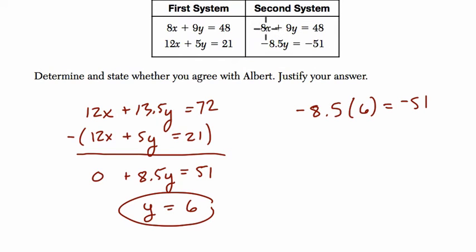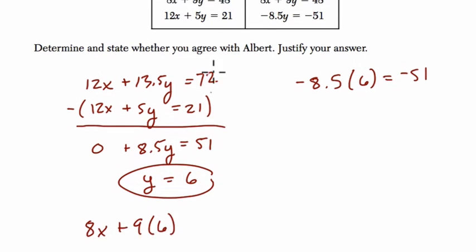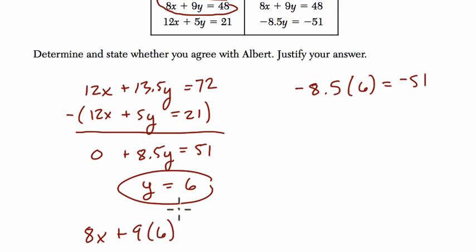If we plug it into the second one, we also need x first. Let's find x. So if we go back, we know y is 6, right? So 8x plus 9 times 6, I'm using the first equation here, equals 48.